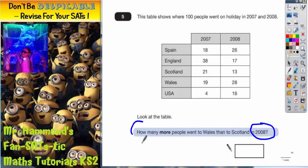Now, any time you get the words how many more did one thing than the other, you need to first of all find the two numbers that you're interested in and then find the difference between them to find how many more one is than the other.